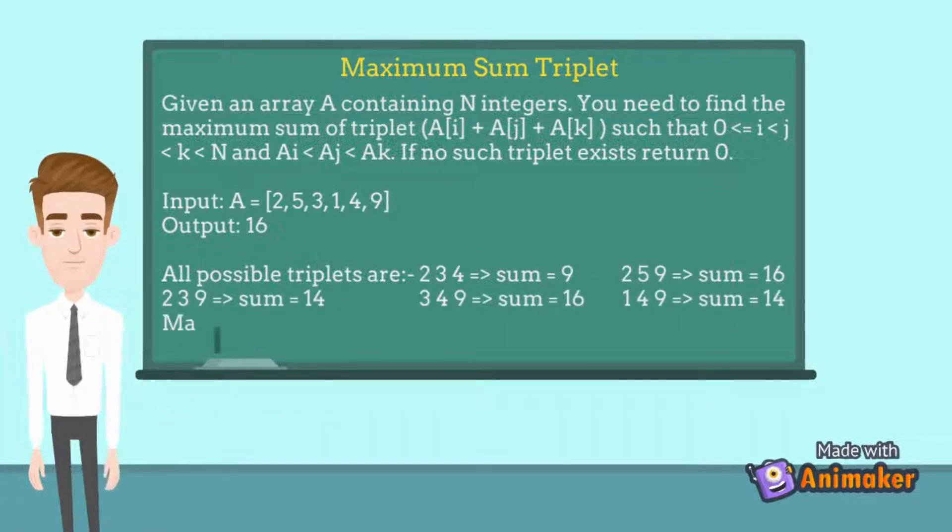Let's understand with examples. For this test case, we have output 16. As we can see, these triplets can be formed using this array. The maximum sum that we can get is 16, from triplet 3, 4 and 9.